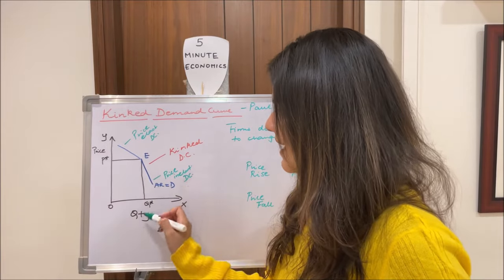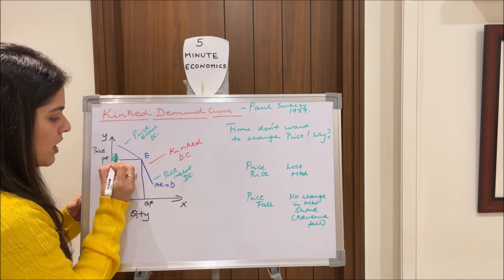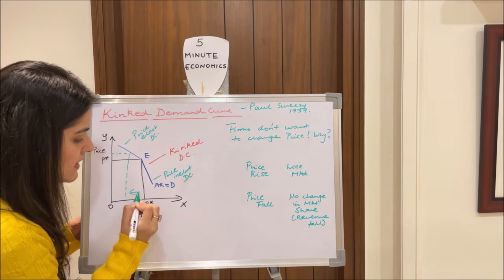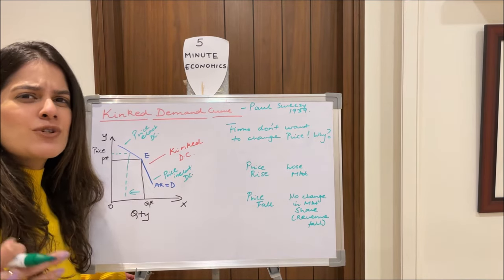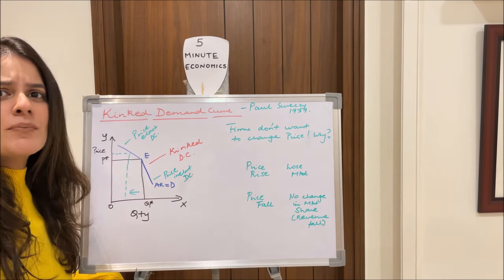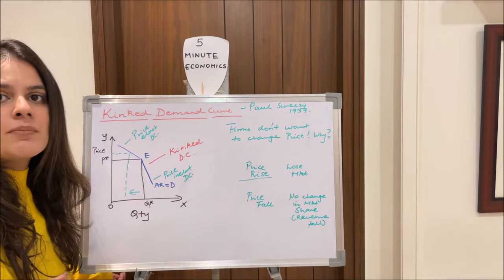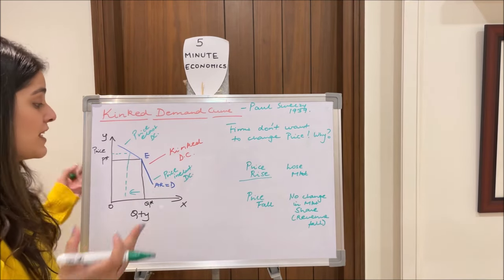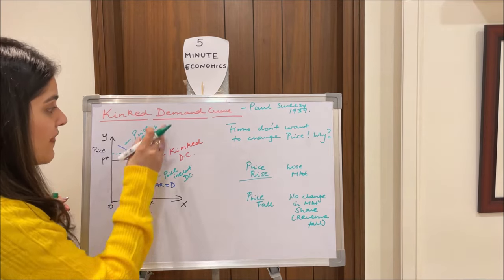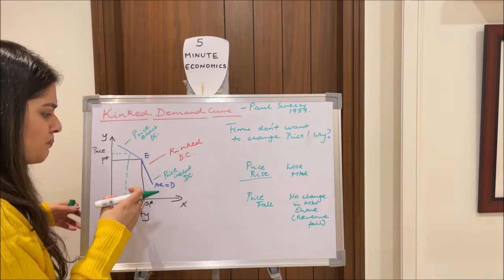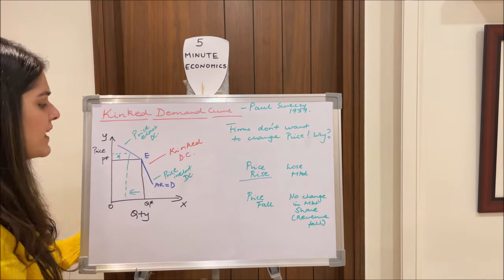Initially our price and quantity are P* and Q*. If one firm increases its price a little, the quantity demanded decreases a lot. Why? Because in an oligopolistic market, if you raise your price, people will not buy from you — they will buy from others and your market share will fall. Raising your price is a very foolish move because we are at the price elastic portion, where even a small rise in price leads to a large fall in quantity demanded.